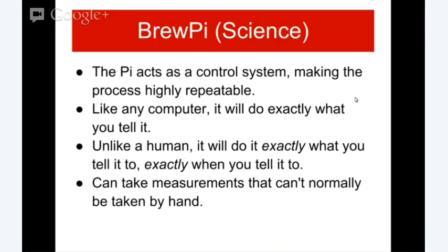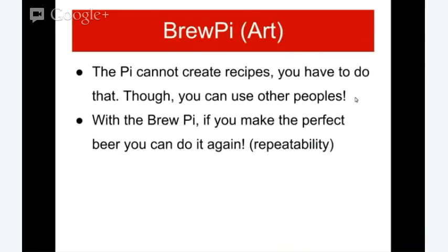The Pi acts as a control system, making the process highly repeatable. Like any computer it will do exactly what you tell it — but unlike a human it will do exactly what you told it, which means don't blame the Pi if you told it to cook the mash too long. A bonus is a system like BrewPi can take measurements at rates, intervals, and places you can't by hand, because it's fully immersed in the system.